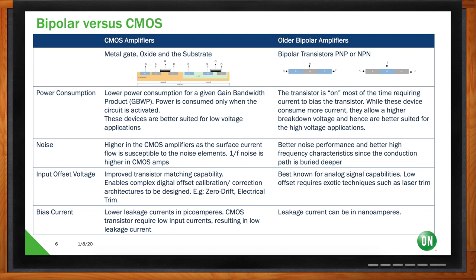On offset voltage — we're talking about older bipolar amplifiers specifically, because newer bipolar amplifiers have advanced processes. With CMOS amplifiers, they're able to get better transistor matching, as well as implementing digital offset calibration techniques, which allows us to get offset as low as 8 or 10 microvolts. Your offset voltage manifests itself as an error at the output, so lower offset means higher accuracy. With older bipolar amplifiers, implementing exotic trimming techniques is very expensive and defeats the cost purpose of using an LM324.